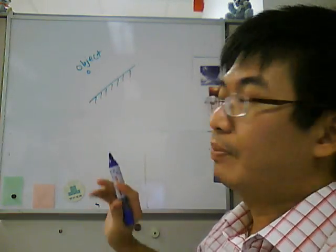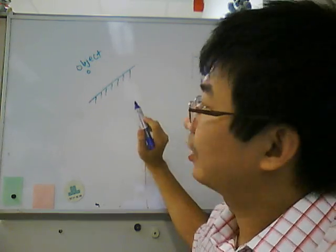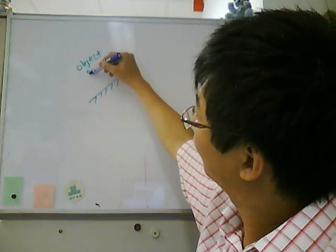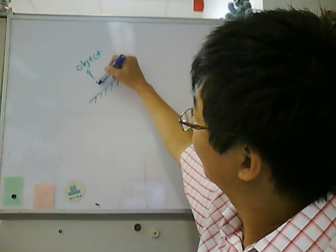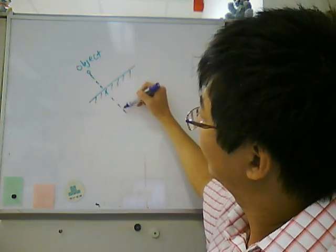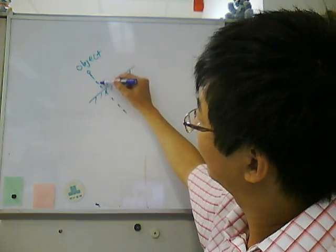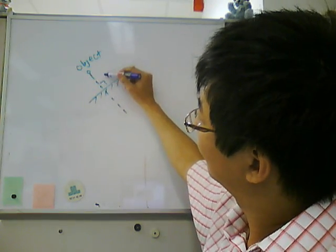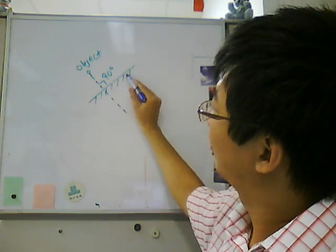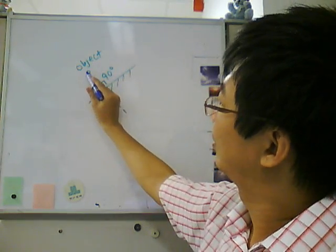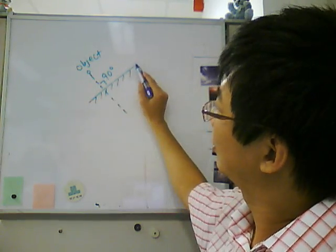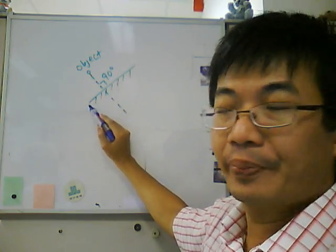Now the purpose is to draw the image. You have to get a perpendicular line called the normal, which is 90 degrees to the mirror. This is the normal. This is the mirror.